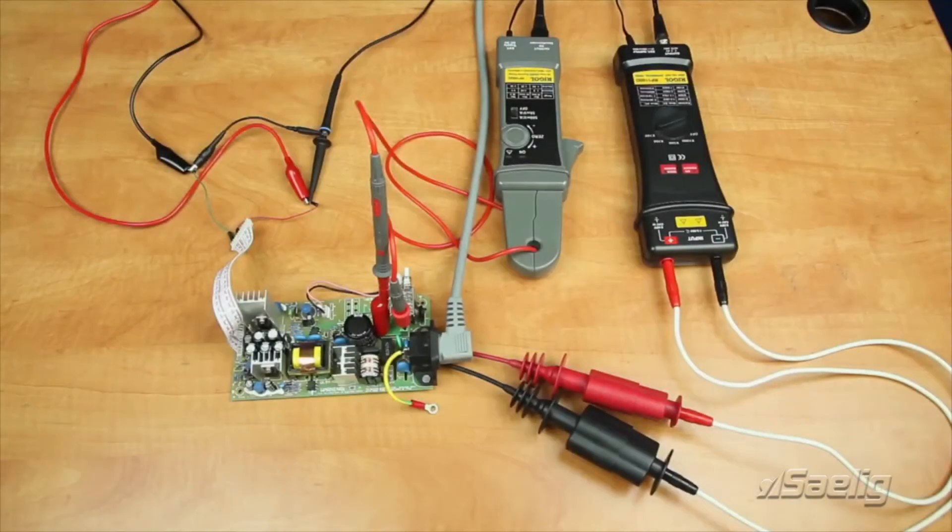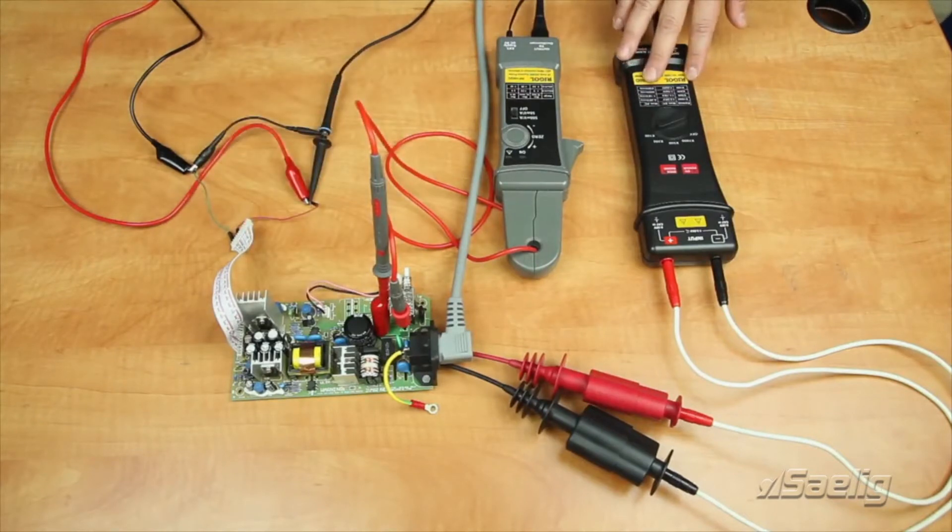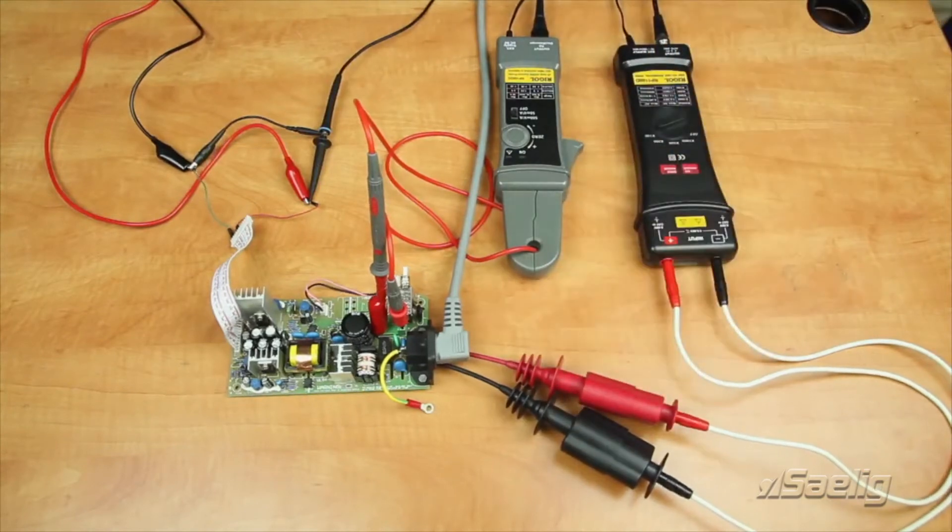We're going to start today with a look at our test setup for these power analysis tests. This is our switching power supply. To measure this, we're going to be using our differential voltage probe connected to the mains. We're going to be using our current probe connected through the fuse location, measuring all the current going into the switching power supply.